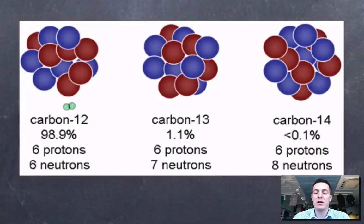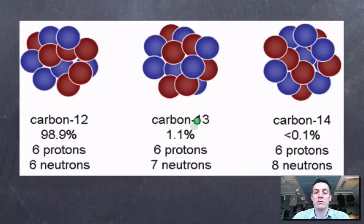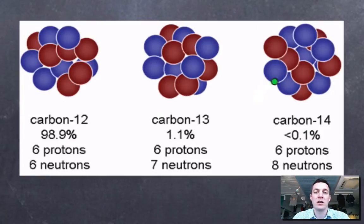So carbon-12, the isotope carbon-12, has six protons and six neutrons. That's why it has a mass number of 12 because the sum of those two is 12. But there are also atoms in nature of carbon-13, which have seven neutrons. And there are also atoms of carbon-14, which is quite often used in radioactive carbon dating, which has eight neutrons.